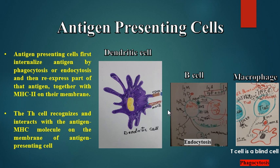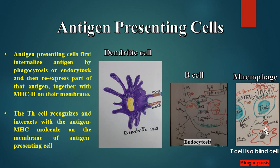These peptides travel to the endoplasmic reticulum and bind to MHC class II molecules inside the antigen presenting cell. The peptides in association with MHC class II are then expressed on the surface of the antigen presenting cell.